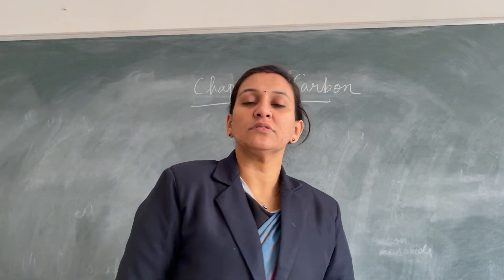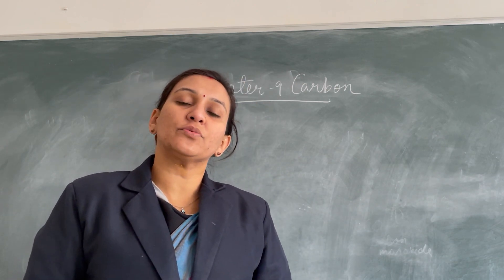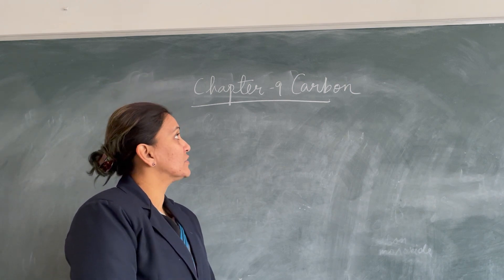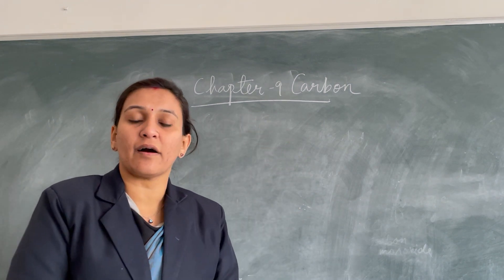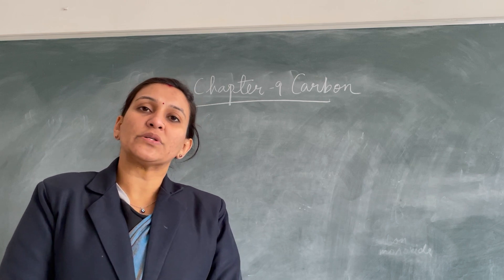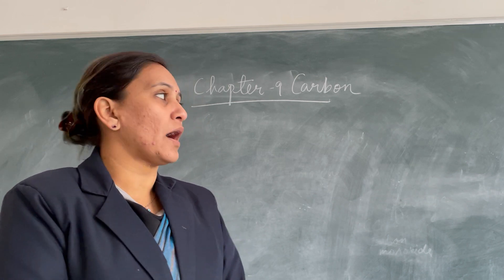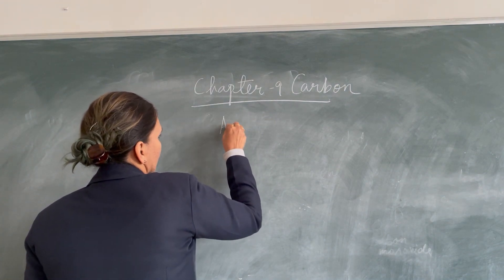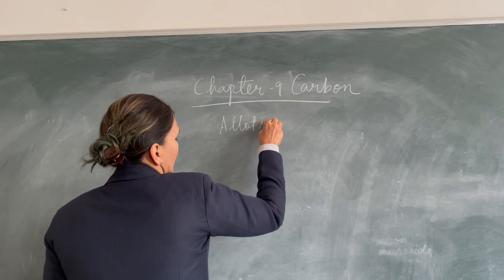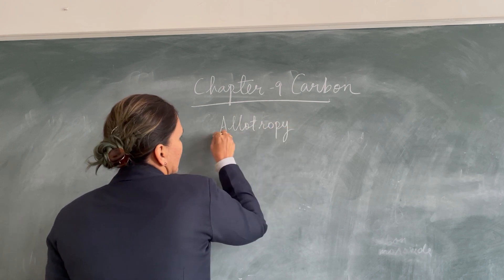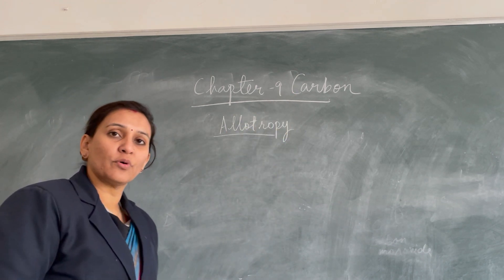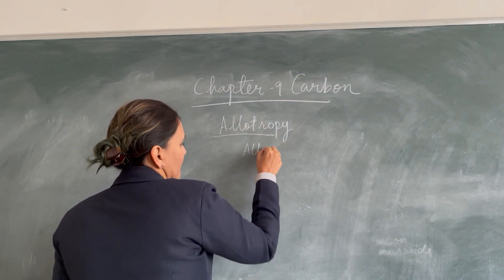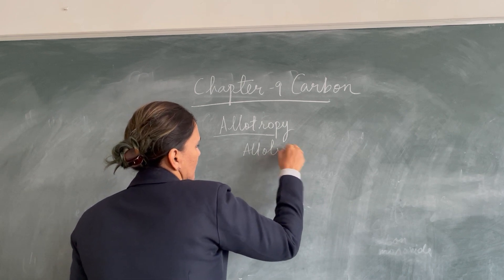Good morning, dear students. I, Anu, welcome you all to this online class of chemistry. Today in this video we are going to continue with chapter number nine, that is carbon. In the previous videos we have already learned about that carbon is able to exhibit a phenomenon that is known as allotropy — that means carbon can exist in more than one form. When we talk of allotropy, we have allotropes of carbon.